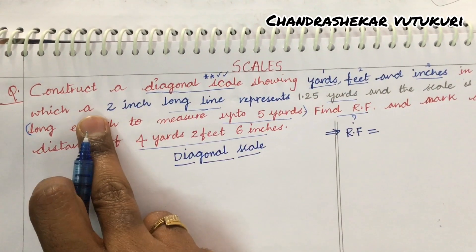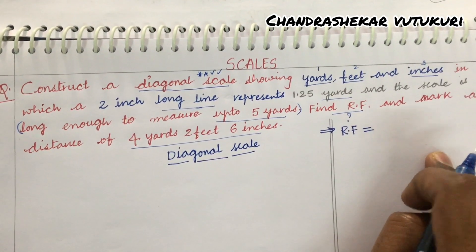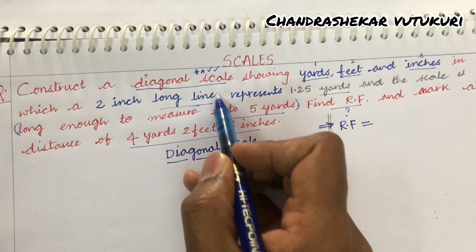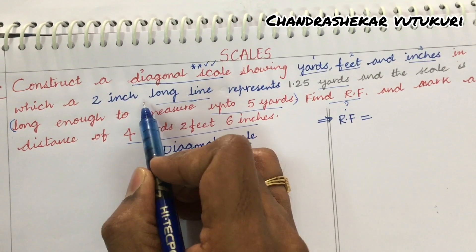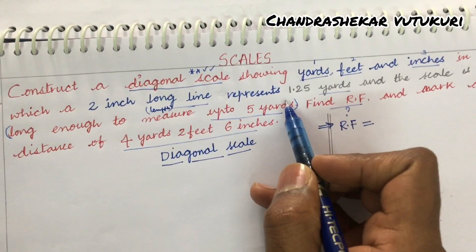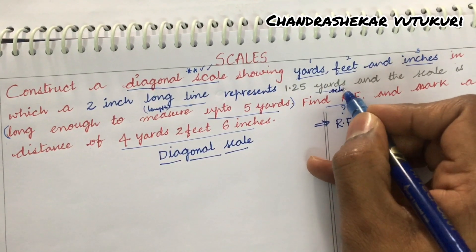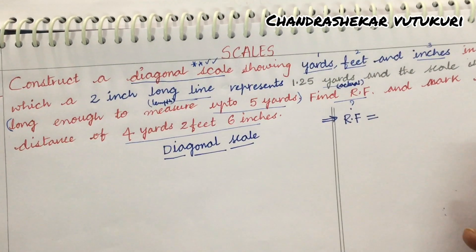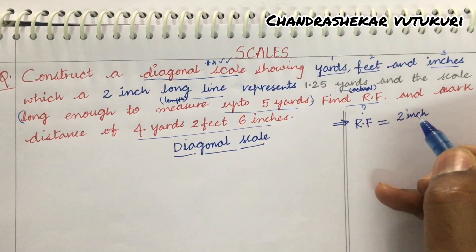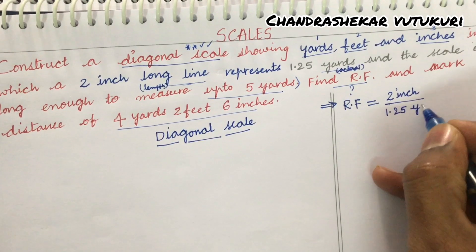As the RF is not given, we focus on how to work it out. RF is defined as the length of the drawing divided by the actual length. Here, the 2-inch long line on the drawing represents 1.25 yards in actual. So the representative factor is 2 inches divided by 1.25 yards.